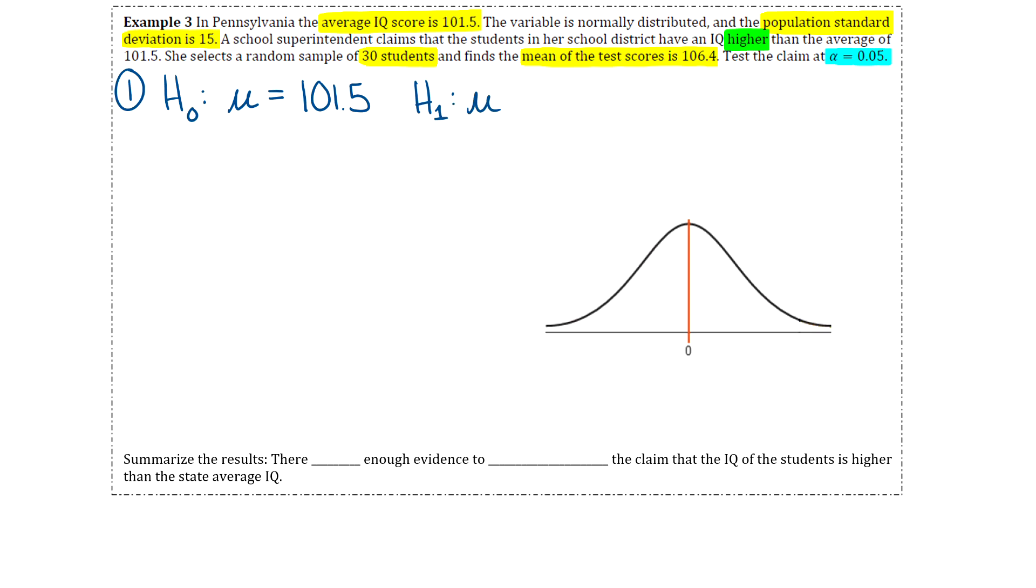For the alternative hypothesis, read the question again and look for key words. It says the school superintendent claims that the students in her district have an IQ higher than the average of 101.5. She thinks that mu is going to be greater than 101.5. I'm going to label that one as the claim since that is what she is claiming.